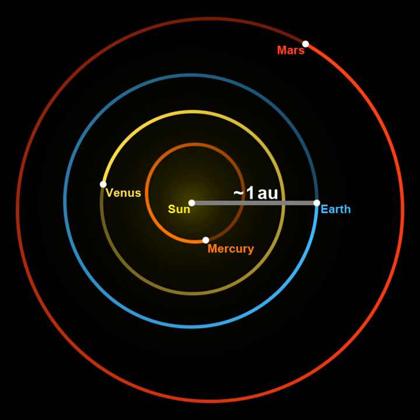The astronomical unit is a unit of length, roughly the distance from Earth to the Sun. However, that distance varies as Earth orbits the Sun, from a maximum to a minimum and back again once a year. Originally conceived as the average of Earth's aphelion and perihelion, since 2012 it has been defined as exactly 149,597,870,700 m, or about 150,000,000 km.